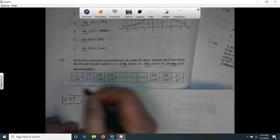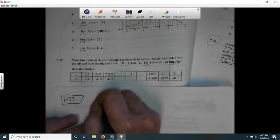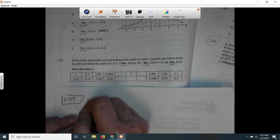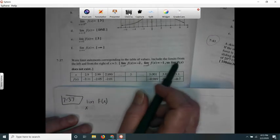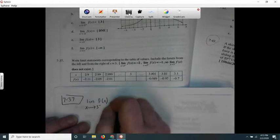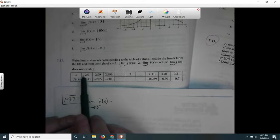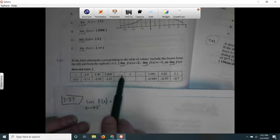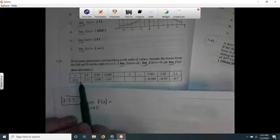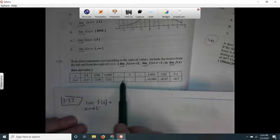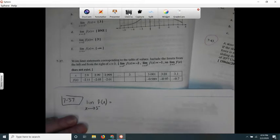7-37, so I need a limit statement. I guess we'll call this thing f of x. Well it is f of x. So I want a limit as x approaches 3. Let's approach from the left. So from the left of 3, see how I'm getting closer and closer to 3: 2.999, 2.9999, 3. And then these numbers, negative 2.11, if I had to guess - we don't have a function or anything - but I would guess that they are tending toward negative 2. So I would say negative 2, and that's what they said.